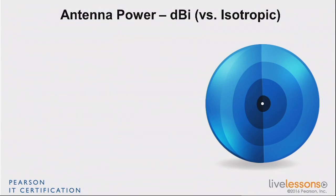What we want to do is compare antennas with one another. The easiest way to do that is to take a reference, just like we did with the one milliwatt reference. That reference is a theoretical, imaginary antenna that we call the isotropic antenna, which you can see on the screen. The isotropic antenna is a theoretical antenna that is one point — one dot — large.